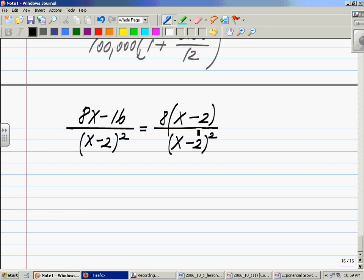Now we can simplify by 1, x minus 2. That's the common factor: x minus 2 on the top, x minus 2 at the bottom. And your expression simplified will be 8 over x minus 2, and this is the answer.